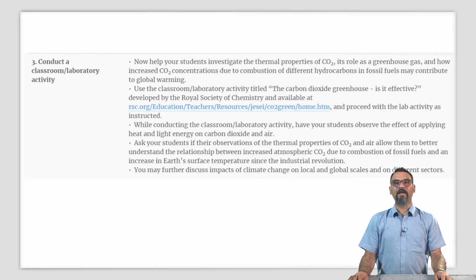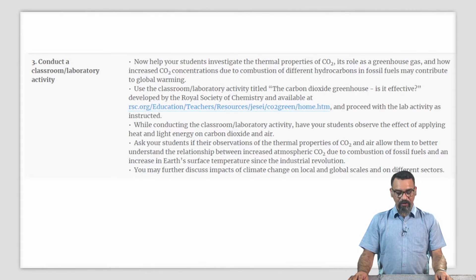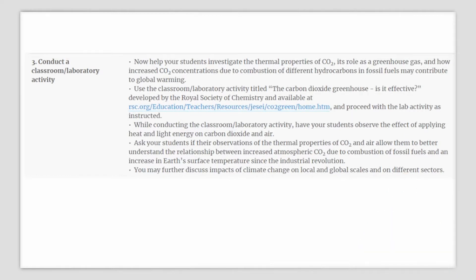This classroom lab activity, titled Is Carbon Dioxide Greenhouse Effective?, is developed by the Royal Society of Chemistry. Proceed with the lab activity as instructed in this particular teaching tool. While conducting this activity, have your students observe the effect of applying heat and light energy on CO2 and air. Ask your students if their observations of the thermal properties of CO2 and air allow them to better understand the relationship between increased CO2 due to combustion of fossil fuels and an increase in Earth's surface temperature since the industrial revolution. You may further discuss impacts of climate change on local and global scales and on different sectors using this activity.